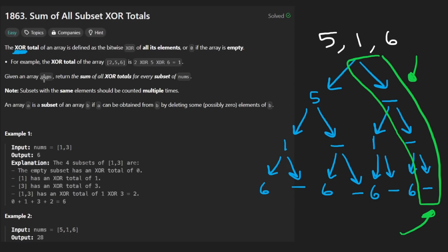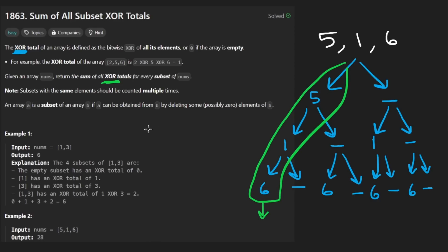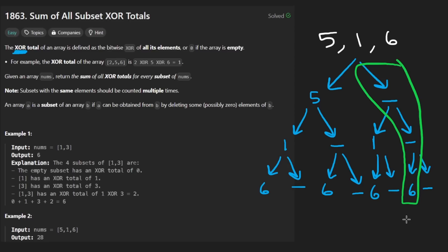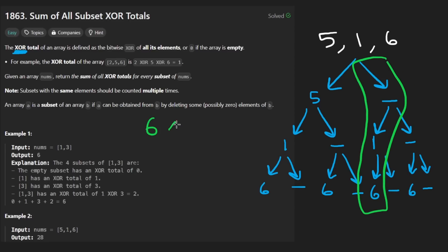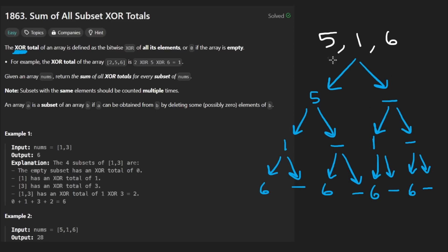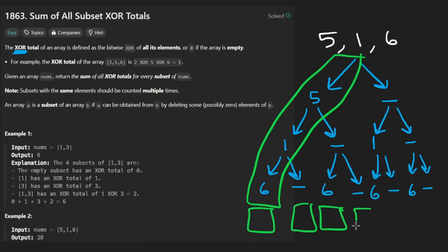In the context of this problem, for every single one of these subsets we want to take all the elements and XOR them together to get a result. If we XOR nothing together, that's going to be 0. A single 6 by itself is just 6. XOR of 6 and 1: in binary, 1 looks like 001 and 6 looks like 110, so XOR gives us 7. For each subset, we XOR all the values to get a total, then add all those totals up — that's what we're trying to return.